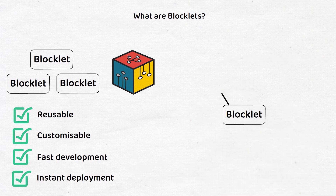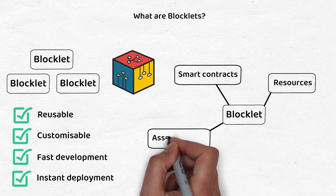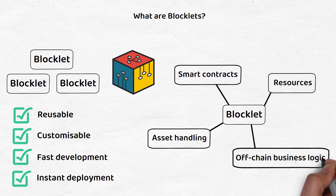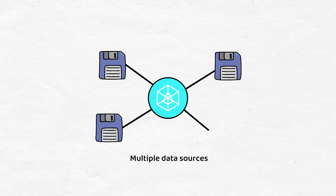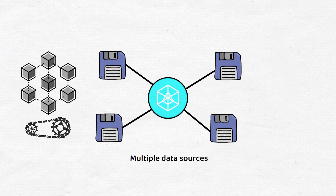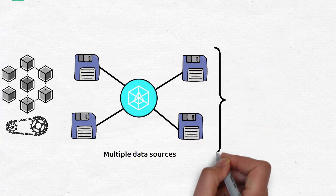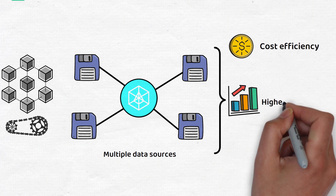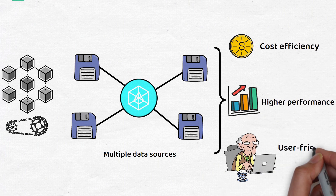In short, blocklets are used to develop smart contracts, resources, asset handling, off-chain business logic, and much more. ArcBlock can also connect with multiple data sources and can perform both on-chain and off-chain computations, making it suitable for a variety of tasks and products. Ultimately, this design gives ArcBlock better cost efficiency and higher performance, while also making the platform more user-friendly overall.